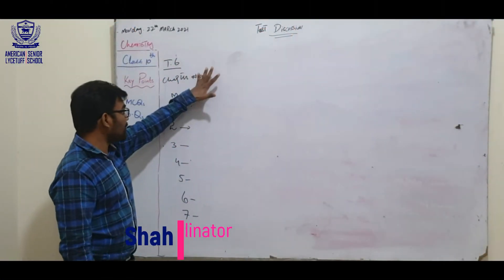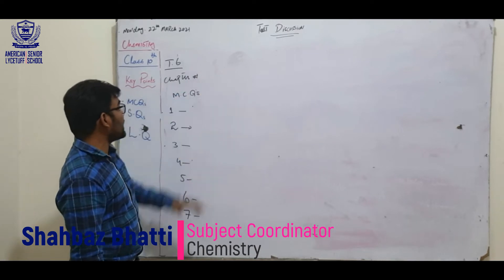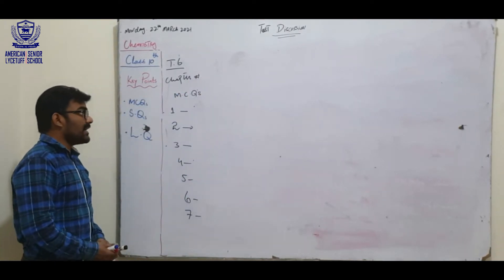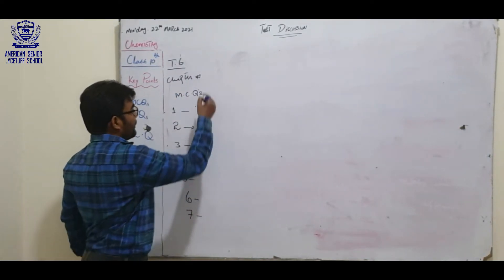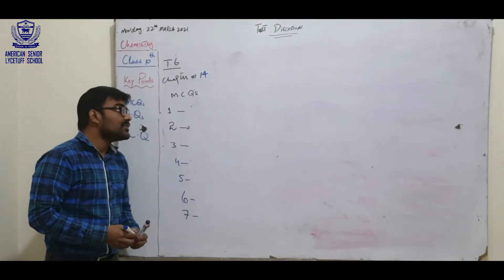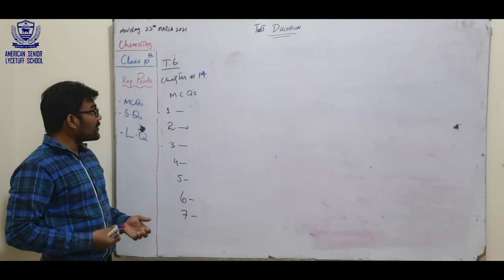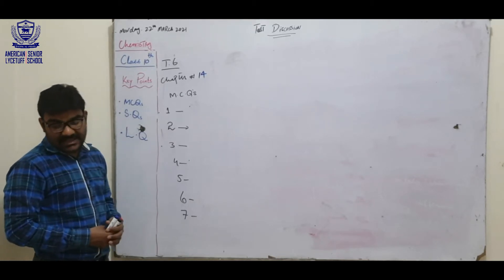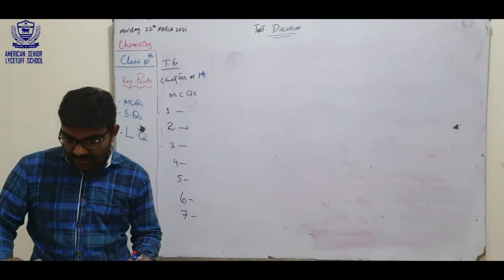We are discussing the chapter T6 of Matric. In T6 of Matric, we have to discuss chapter number 14, Environmental Chemistry or Atmosphere. In T6 of Matric, we have to discuss the first step.